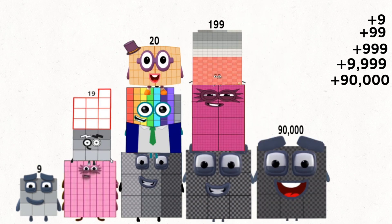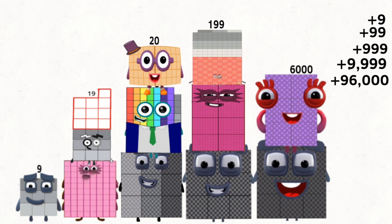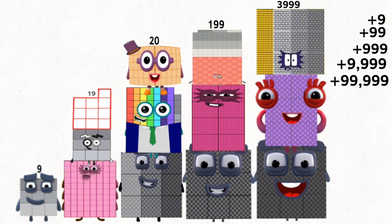90,000 plus 6,000 plus 999, and equals is 99,999.